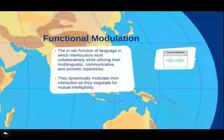There's also functional modulation, which happens at the micro level. This is the in-situ function of language in which interlocutors work collaboratively while utilizing their multi-linguistic, communicative, and semiotic repertoires. They dynamically modulate their interaction as they negotiate for mutual intelligibility. The goal here is to understand one another. When two people are engaged in communication, they use a full set of their repertoire and resources in order to communicate, even if that means utilization of words and phrases beyond the language that they're currently speaking.